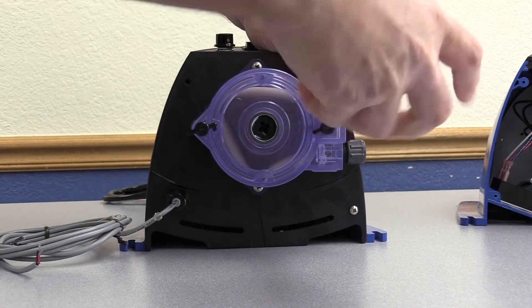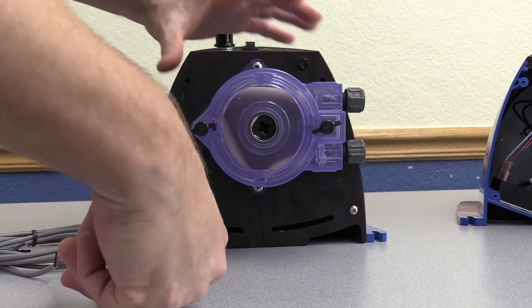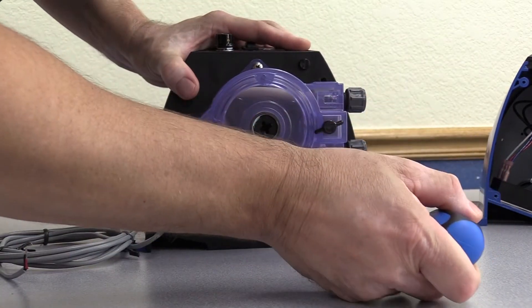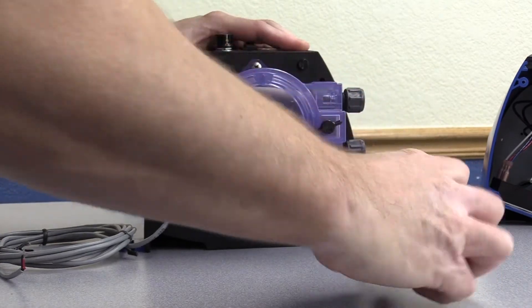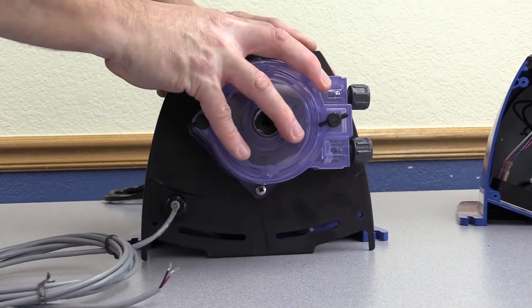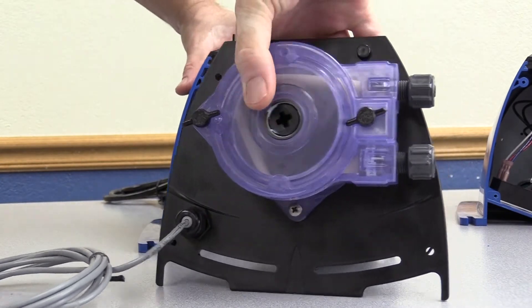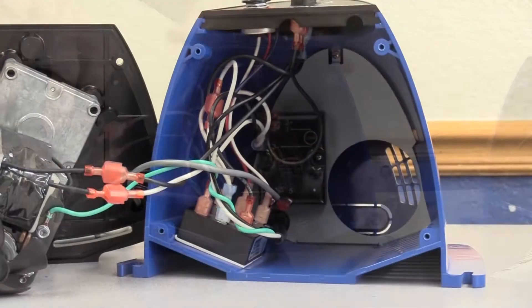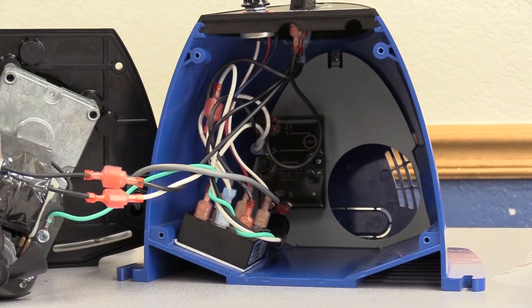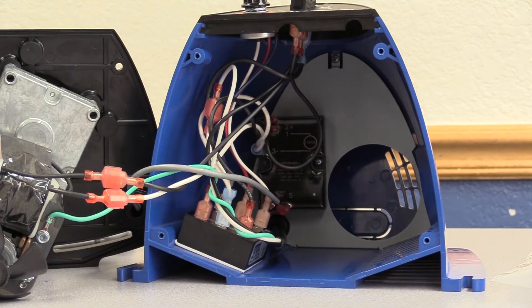Loosen the four screws on the front of the pump and carefully swing the front panel out of the way. Locate the timer module on the inside of the housing and or the baffle.